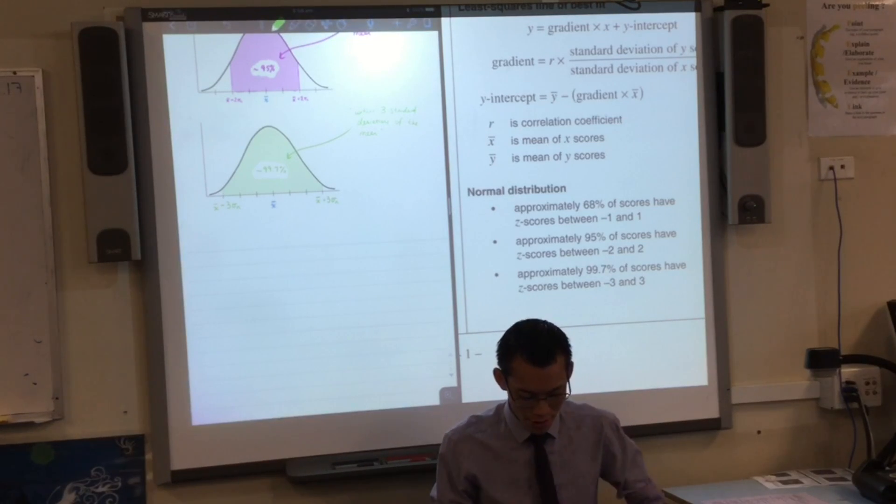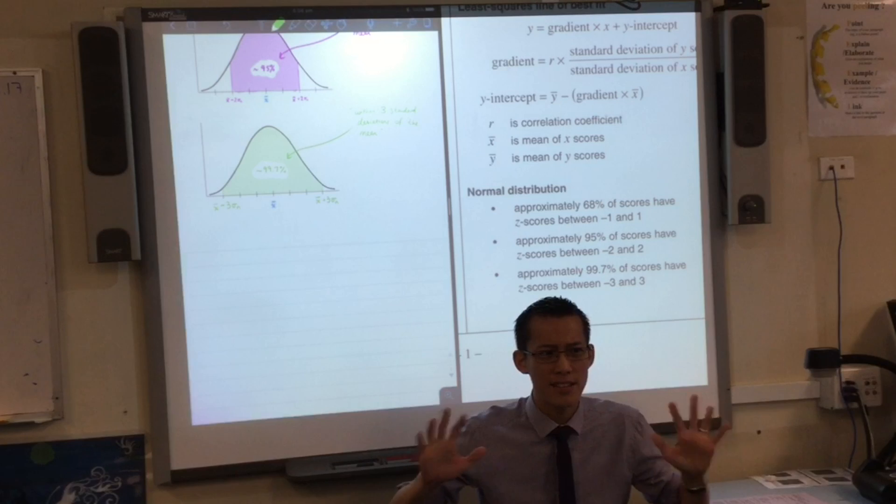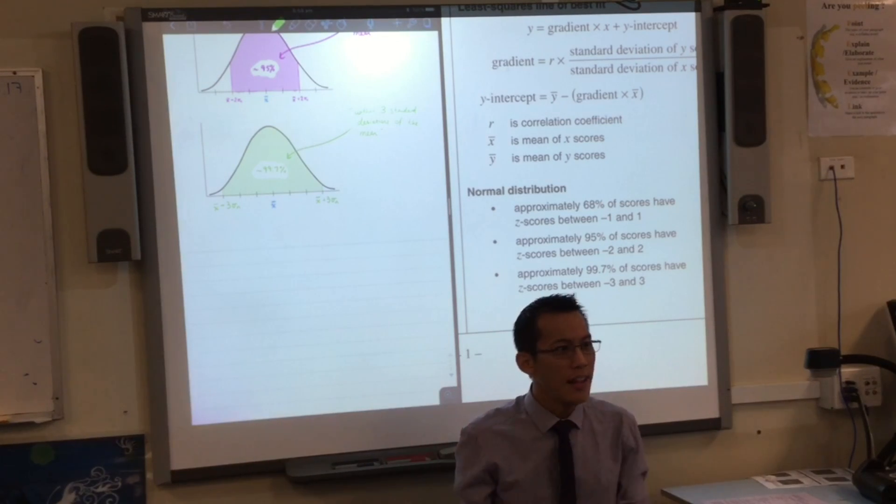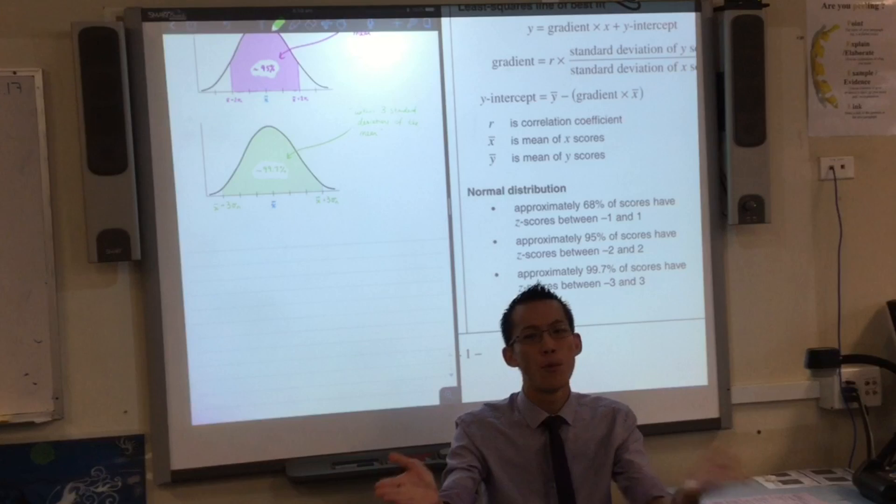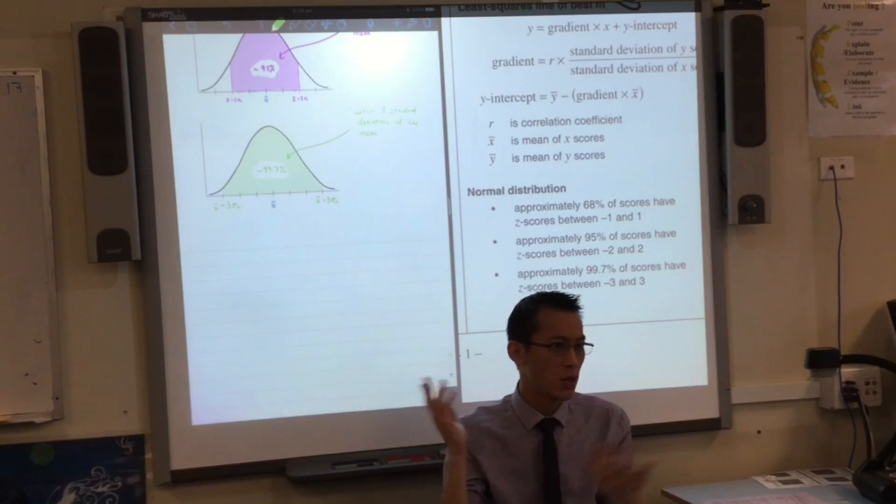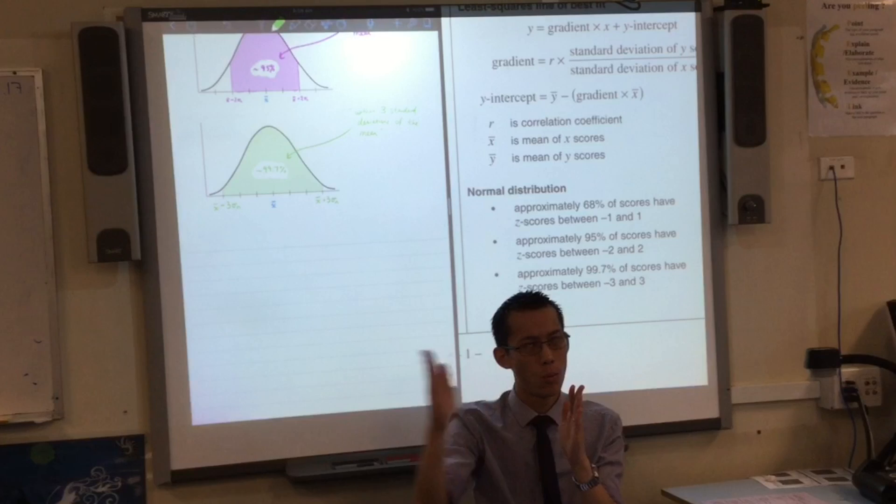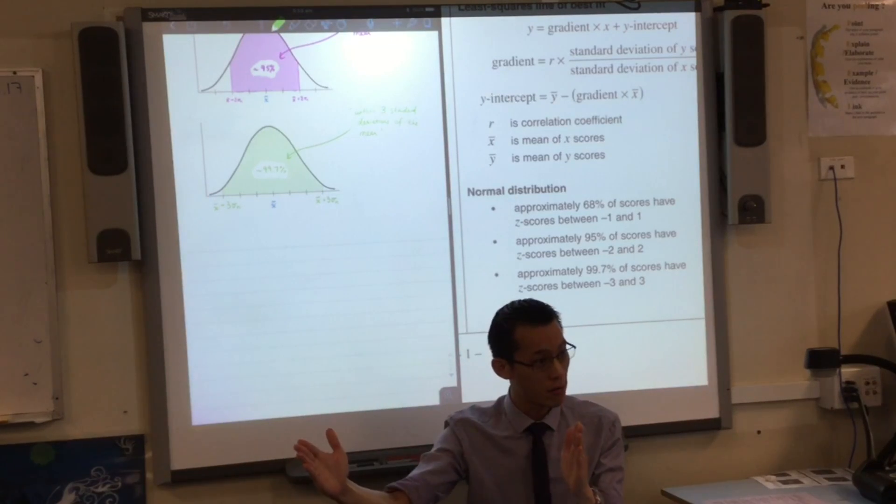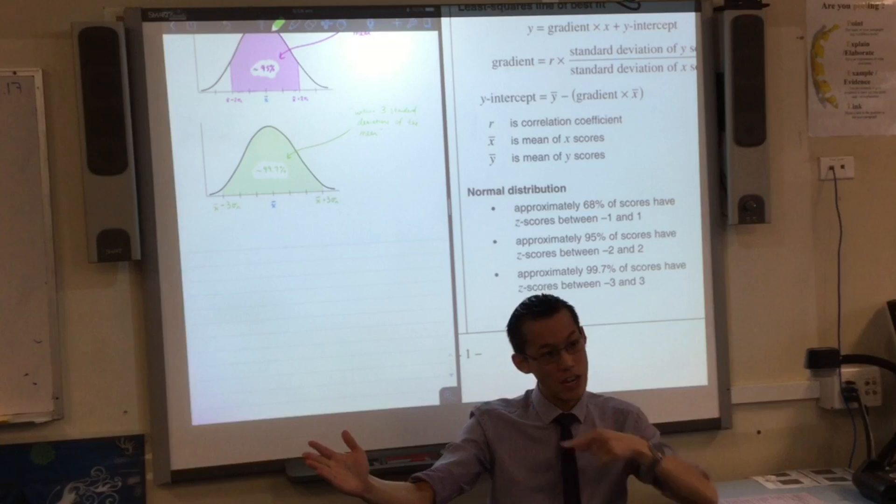You've got approximately 68% who have Z scores. What is a Z score? What's the relevance of Z score? I haven't said Z score at all until now. That is how many standard deviations your score is above or below the mean. Does that make sense? So Z score of negative one would mean you are one standard deviation below, right? Z score of positive one means you're one standard deviation above.